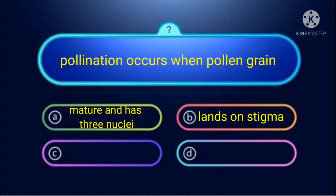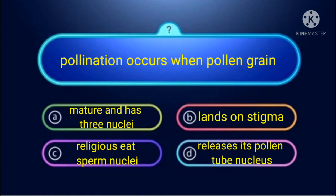Next question regarding pollination definition — the options include: pollen grain lands on stigma, releases sperm nuclei, and releases pollen tube nucleus. The right answer is 'lands on the stigma.' Pollination means transfer of pollen grain from anther to stigma — the pollen grain which lands on the stigma. This process is called pollination.